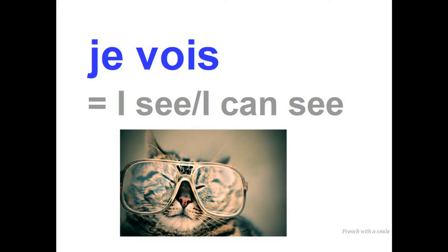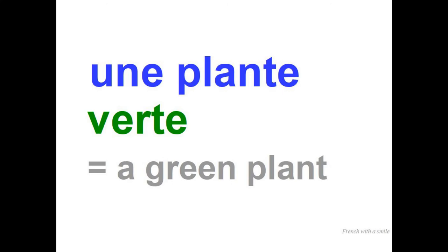Let's start with I. 'I' is je. 'I see' or 'I can see' is je vois. Je vois. Once again: je vois. Together: je vois. Now you remember 'a green plant': une plante verte. Once again: une plante verte. Together: une plante verte.